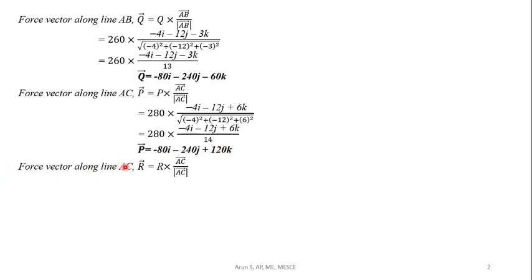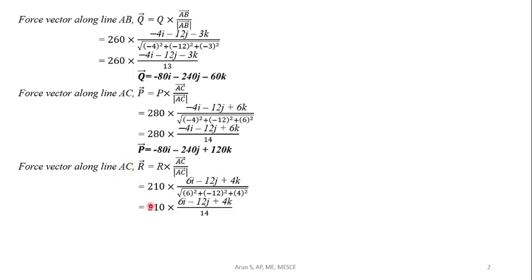And lastly, the force vector along line AD is R vector, given by R multiplied by the AD vector divided by the modulus of AD vector. Substituting 210 into (6i - 12j + 4k) divided by the root of (6² + (-12)² + 4²). Simplifying, we get R vector as 90i - 180j + 60k.